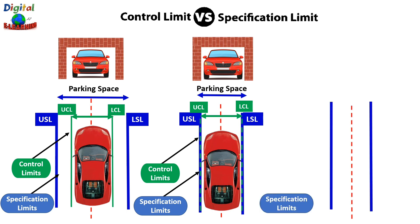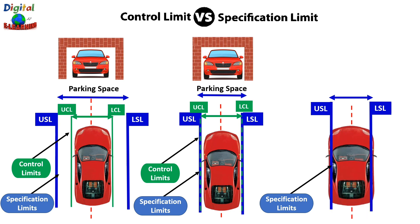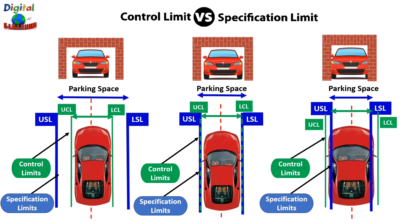Case three: when the specification limit falls between the control limits. That means your car is too wide for the garage, and nothing you do to center the process will help — you have to change the dispersion of the process, meaning make the car smaller. When control limits exceed the specification limits, some part of the process will be functioning outside the specification range, meaning your process will start producing defects.